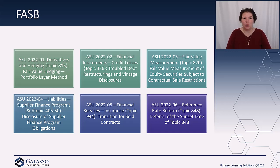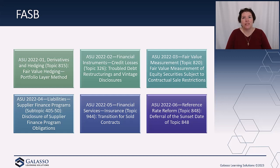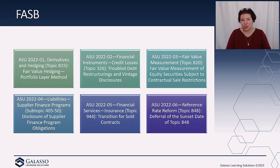ASU 2022-01 amends hedging to introduce the portfolio layer method, which is going to replace the last of layer method and allow more layers to be hedged. ASU 2022-02, also in the financial instruments area, removes the concept of troubled debt restructuring, but does add a couple of new disclosures due to CECL. So CECL is really addressing a lot of the need there — remove the concept of TDR, but do provide some additional disclosures.